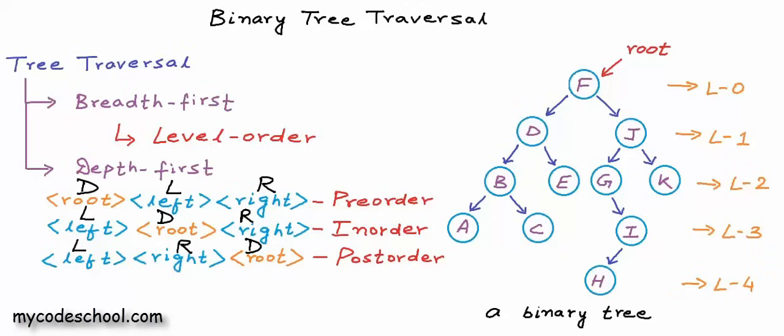Pre-order, in-order, and post-order are really easy and intuitive to implement using recursion, but we will discuss implementation later. Let's now see what will be the pre-order, in-order, and post-order traversal for the tree I've drawn here.